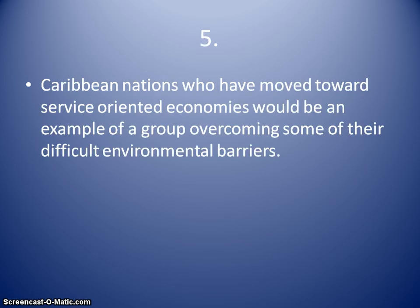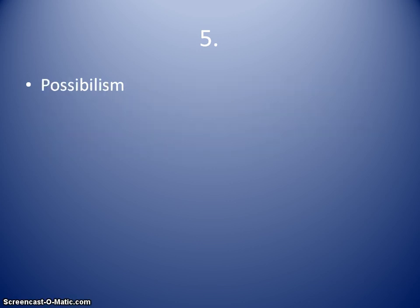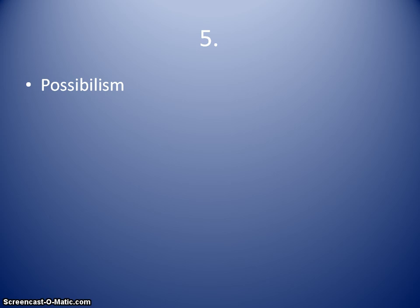Statement five: Caribbean nations who have moved towards service-oriented economies would be an example of a group overcoming some of their difficult environmental barriers. That's going to be possibilism. Many Caribbean nations have developed the tourist industry, the banking industry, and others — they've been able to overcome an environment that maybe wouldn't allow large industries or resource extraction. They're smaller countries not able to compete on a larger scale in agriculture or aquaculture, so this is possibilism because they've overcome their limitations through a move into a different segment of the economy.